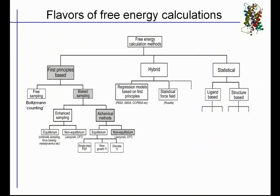Which flavors of free energy calculations are there? There are many because of the importance of being able to estimate free energies. We have first principles based methods — based on the first principles of statistical mechanics. Then we have more statistical-based methods, which can be either ligand-based or protein structure-based. We also have hybrid methods combining the pros of both, which can be purely statistical — you may have heard of Rosetta, which uses statistical force fields to estimate free energies — and more heuristic methods using regression models and MMPBSA. Today we will be focusing on first-principle-based methods.